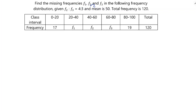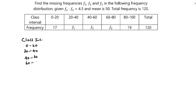Find the missing frequencies f1, f2, f3 in the following frequency distribution, given f2 is to f3 is 4 is to 3, the mean is 50, and the total frequency is 120. The class intervals are 0-20, 20-40, 40-60, 60-80, and 80-100 with frequencies 17, f1, f2, f3, and 19. I'll consider f1 as x.